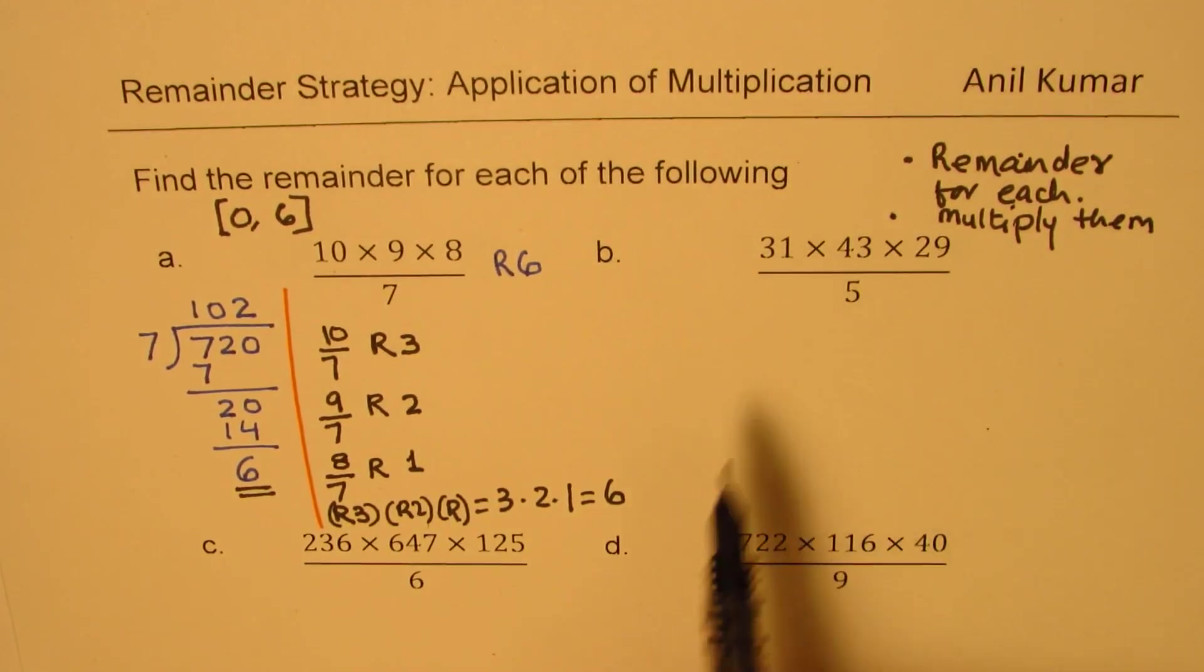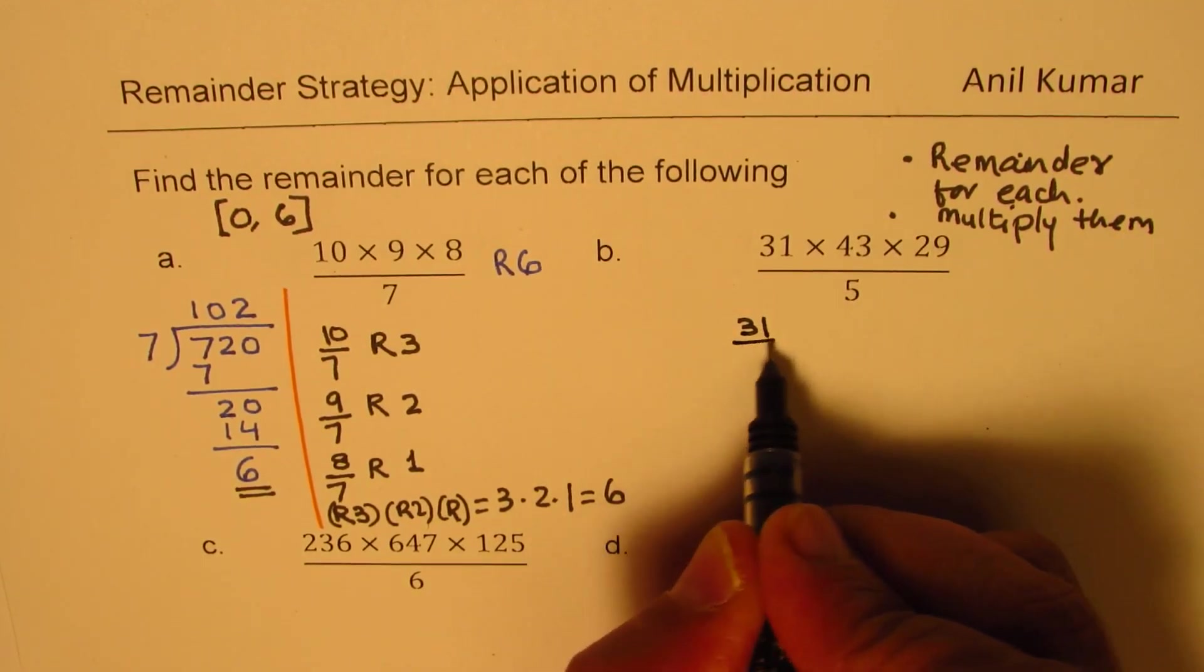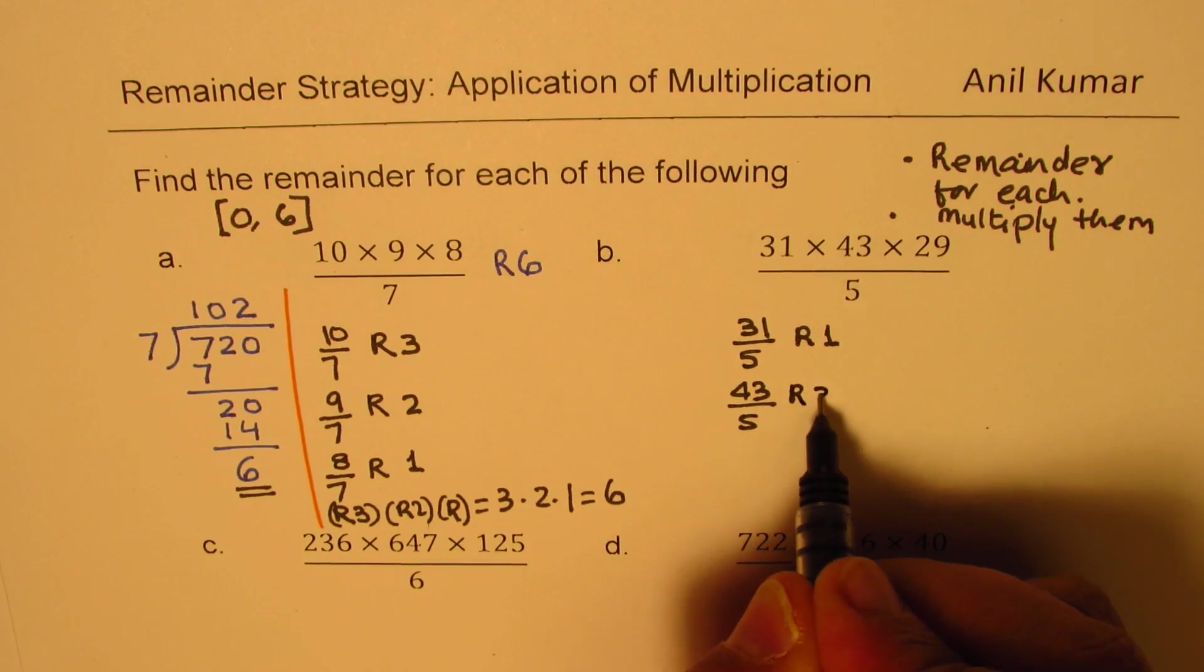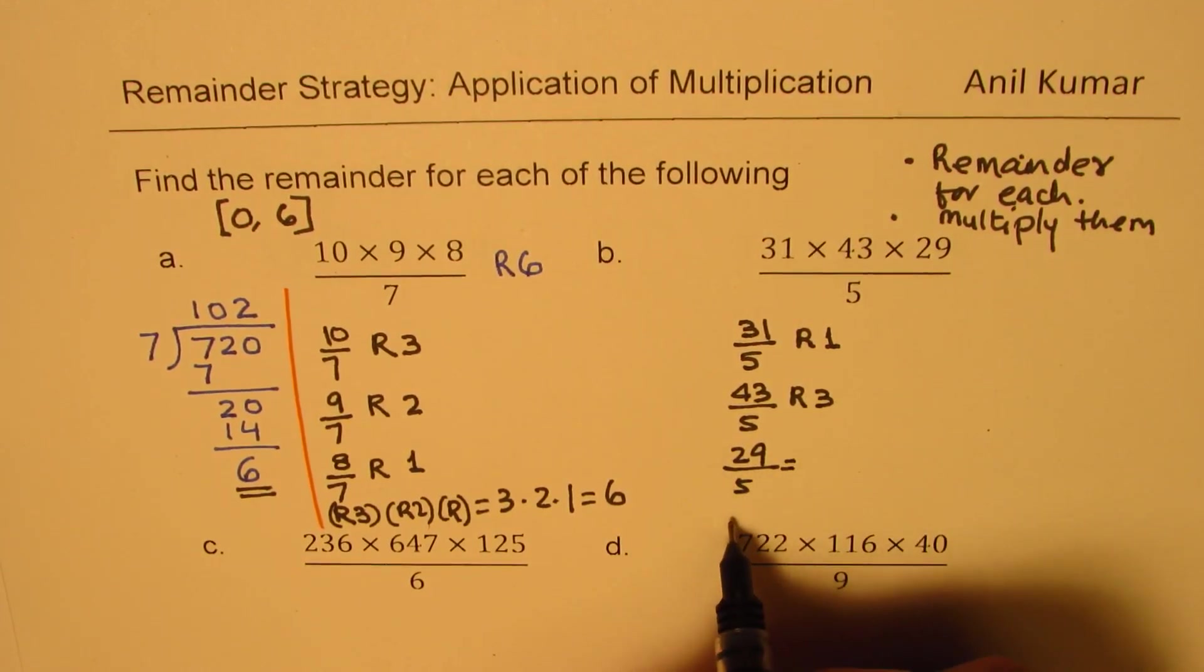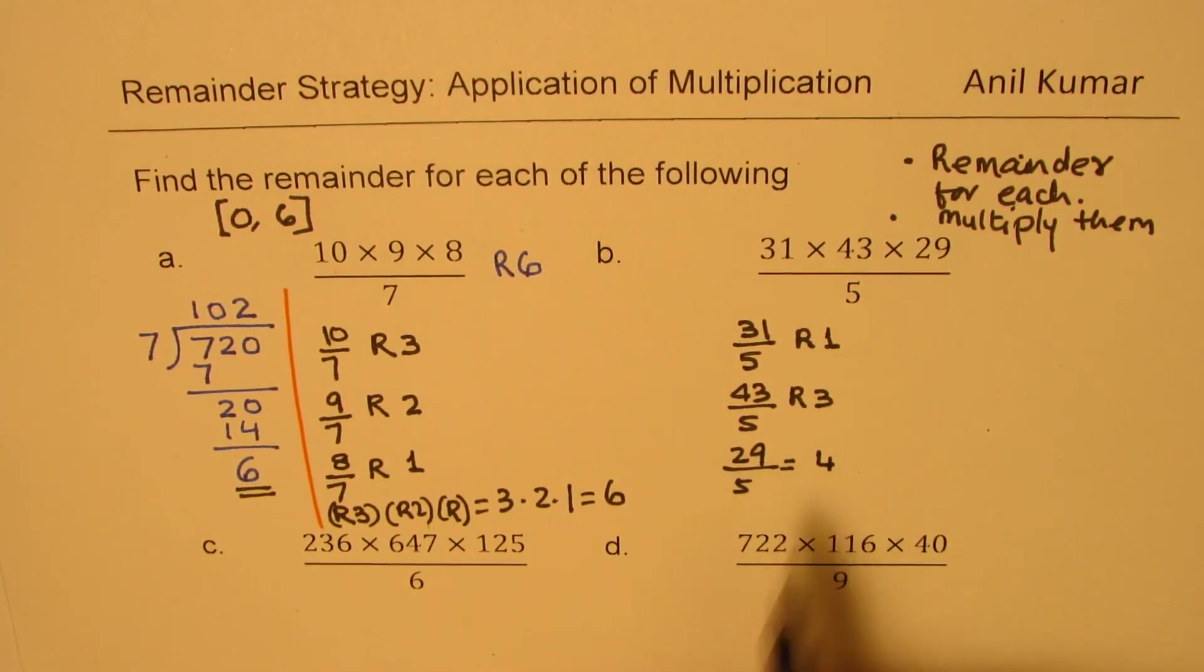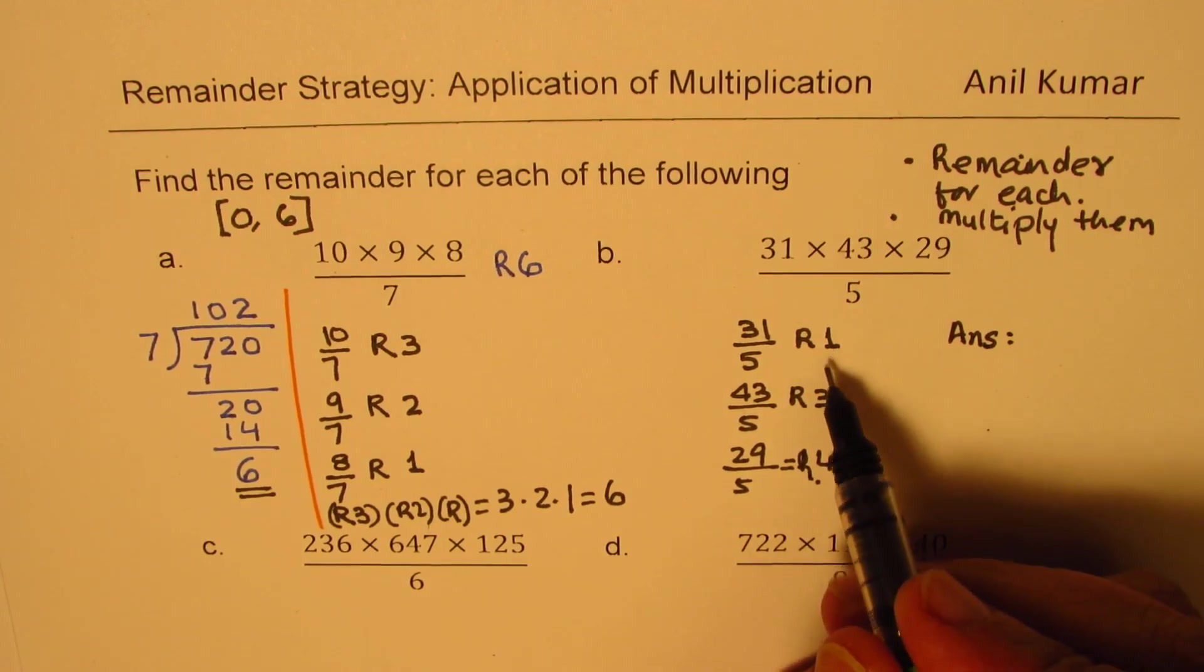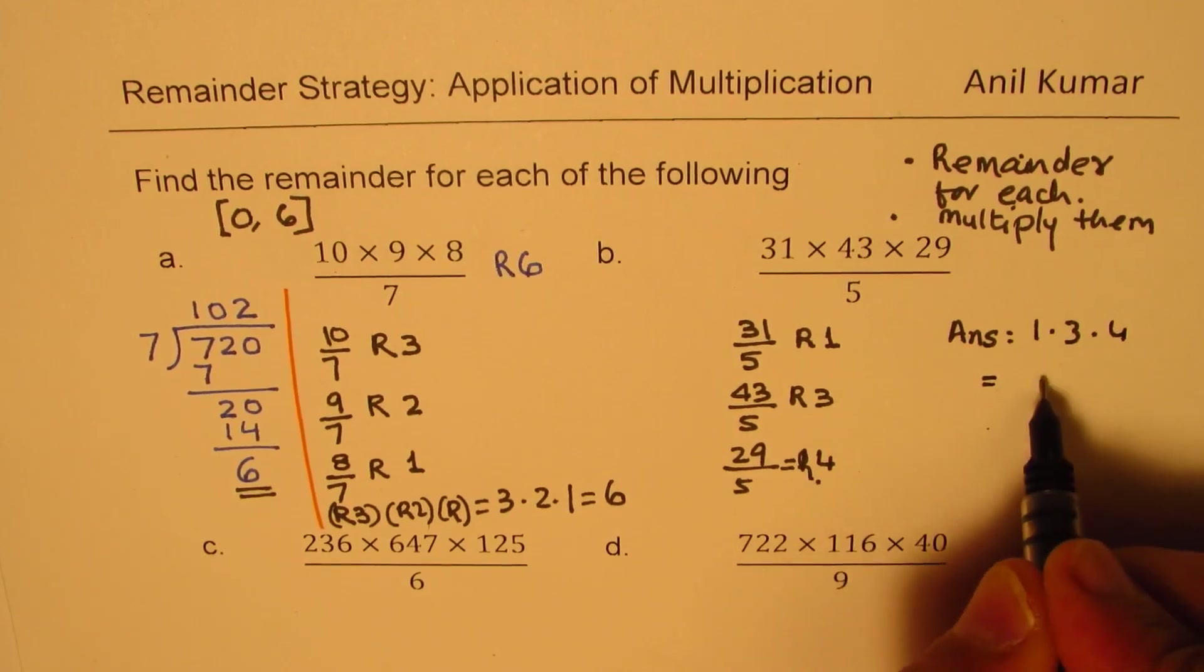Let's apply this to the second question. Now, here, if I divide 31 by 5, the remainder is going to be 1. 43 divided by 5, the remainder is going to be 3. And 29 divided by 5, the remainder is going to be 4. Because 25 goes fully and then 4 is the remainder. So, the answer should be what? Well, you will say the answer is 1 times 3 times 4. So, you will write 1 times 3 times 4, which gives me 12.